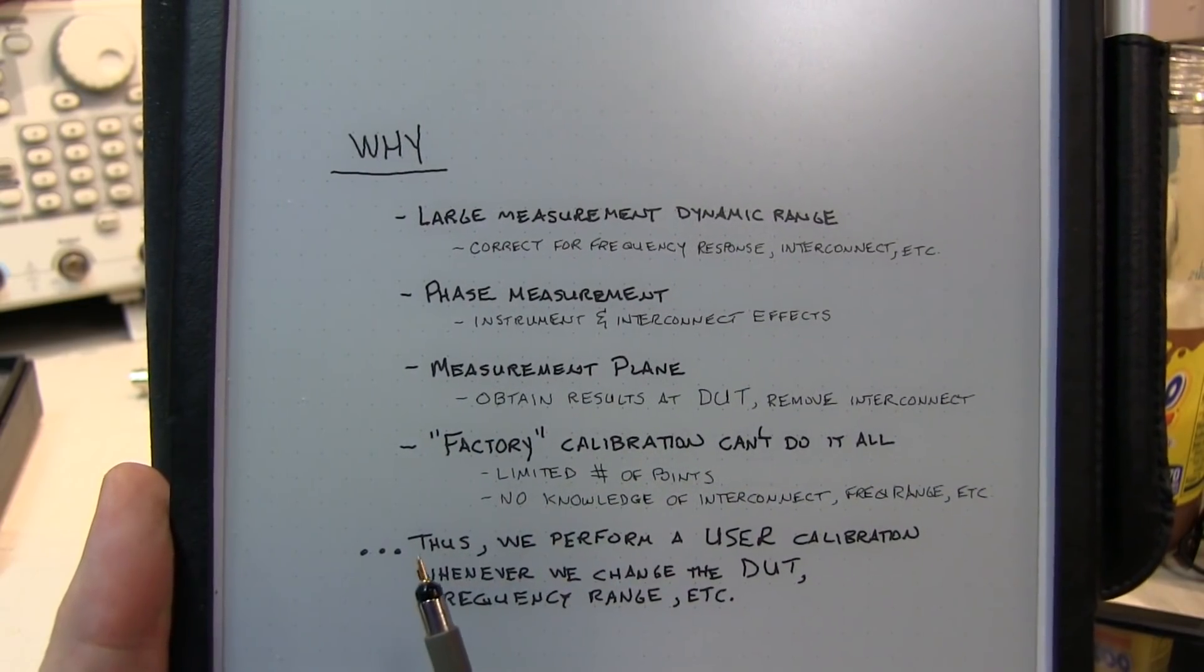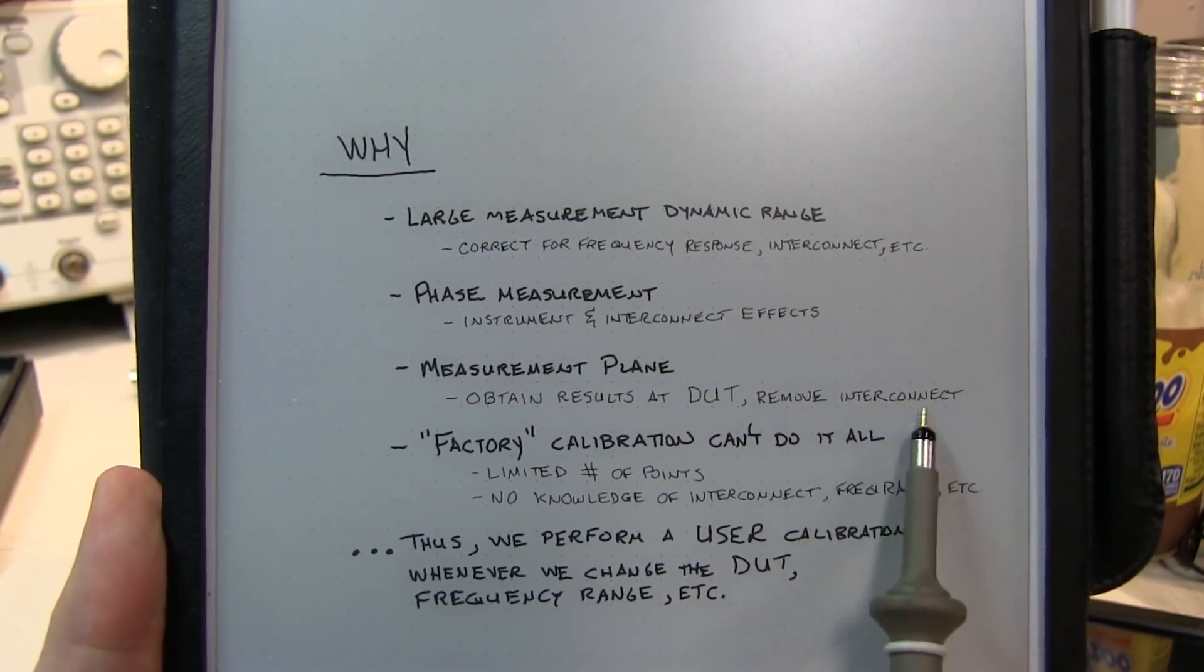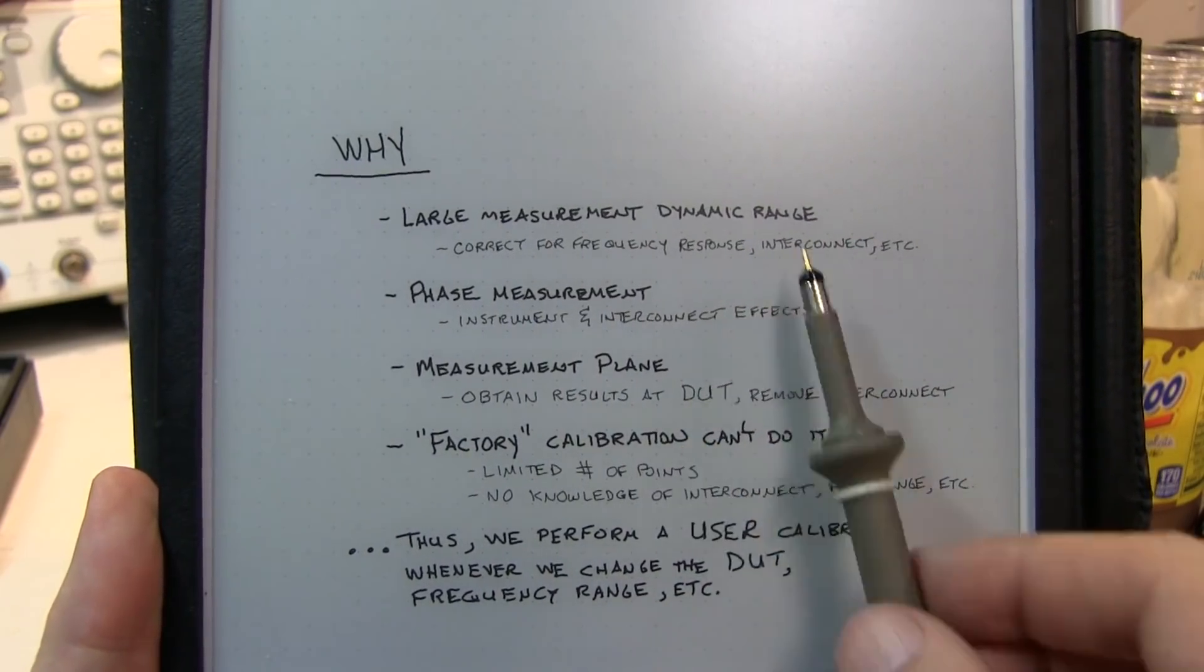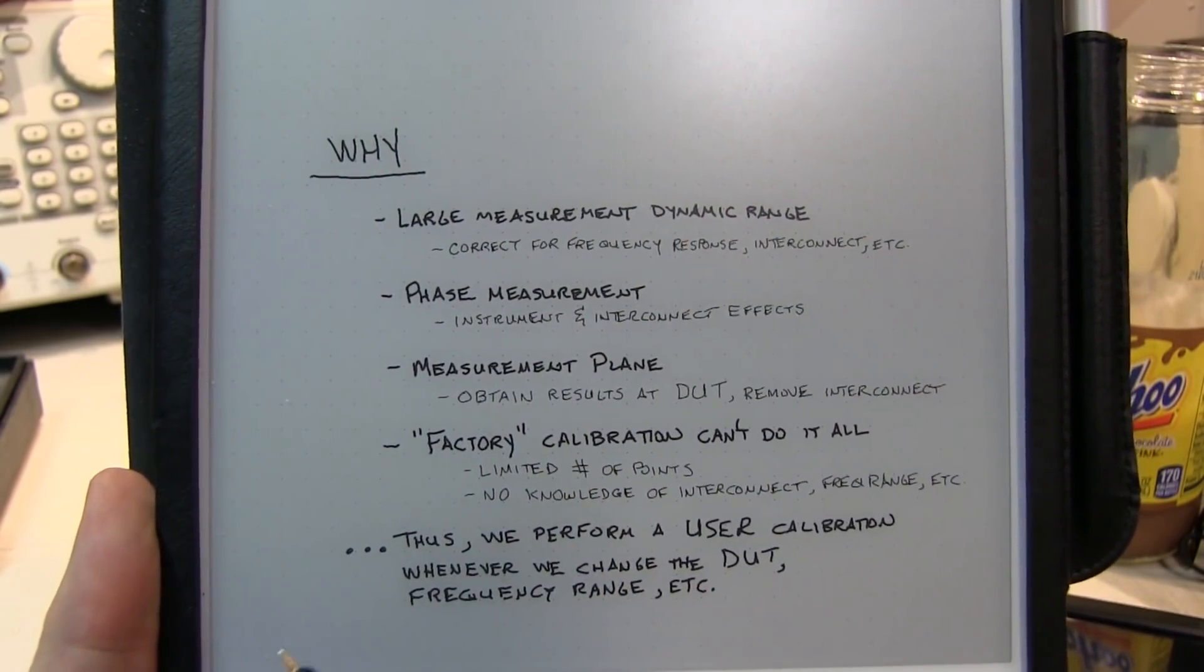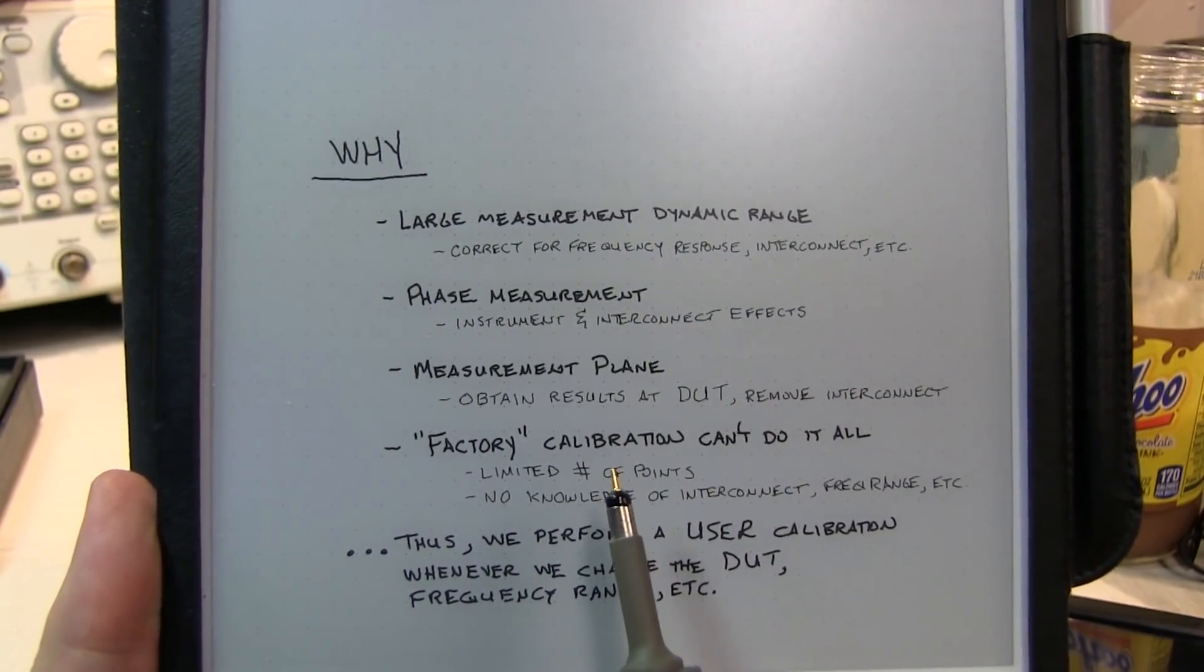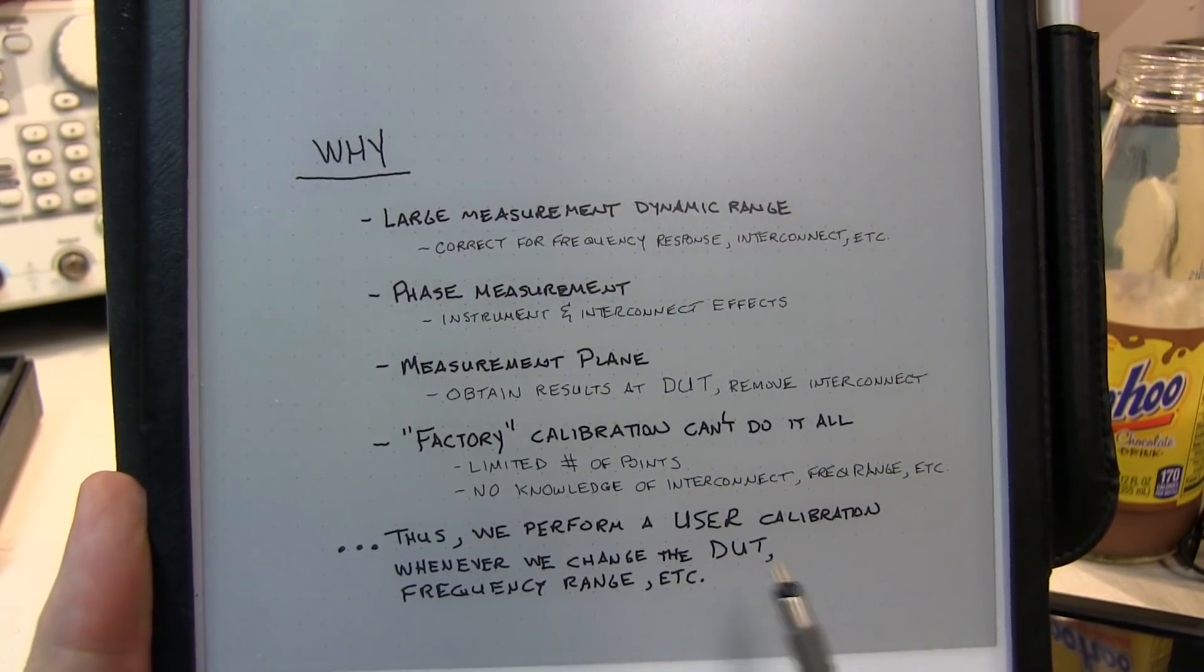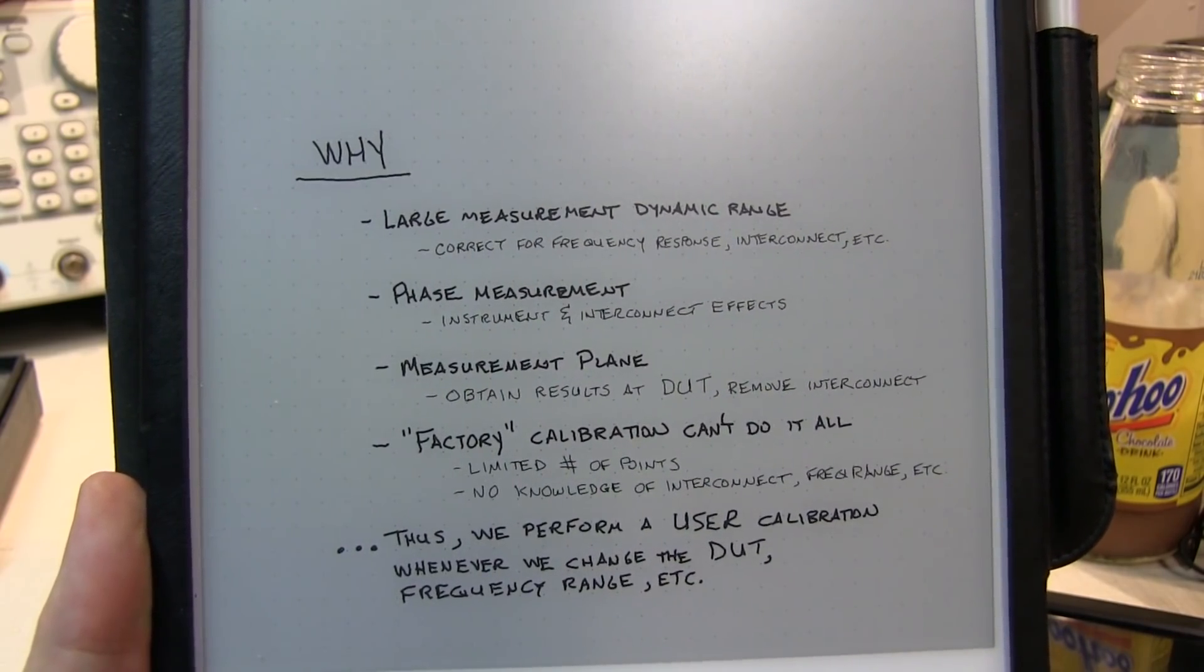So you might say, why doesn't a factory calibration do what you need? Well, it really can't. The factory's got no knowledge of the interconnect you're going to put between the VNA and your DUT, so it can't establish a measurement plane at your DUT. And it won't be able to correct for the frequency response or phase response of that interconnect. Also there's a limited number of points that a factory calibration can do, so those points most likely will not line up with the measurement points you're going to make for your DUT. Thus, we must perform a user calibration whenever we change the device under test, the frequency range, the interconnects, or anything like that.